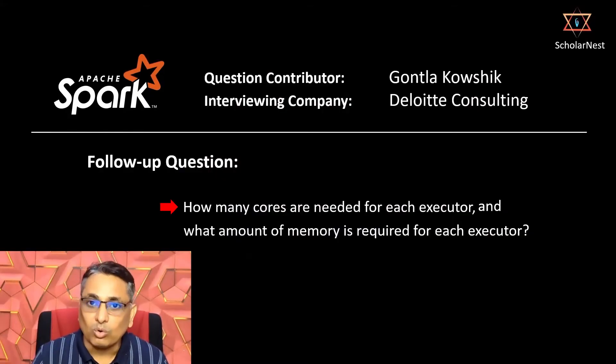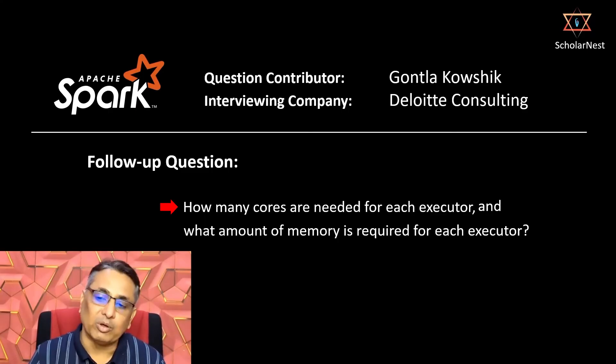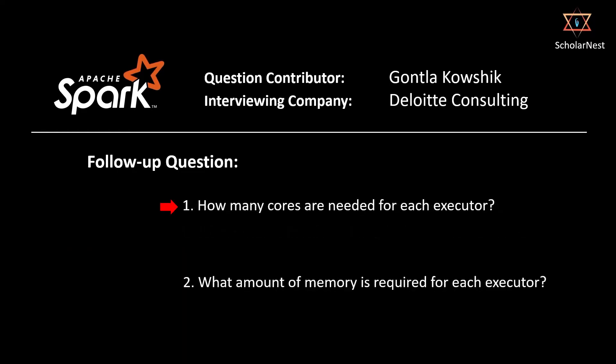Now let's address the follow-up questions: how many cores are needed for each executor, and what amount of memory is required for each executor? We already answered the first part — you need 5 cores per executor. Now let's take up the second question: how much memory is required for each executor?